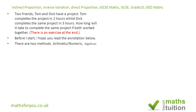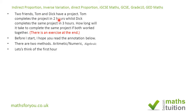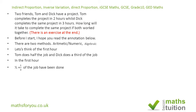There are two methods: the arithmetic or numeric method, and the algebraic method. For the numeric method, look at what happens in the first hour. Tom will have finished half of the work, and Dick will have finished one-third of the same job. So the amount of work done by both combined is one-half plus one-third, which in equivalent fractions is three-sixths plus two-sixths, giving five-sixths.